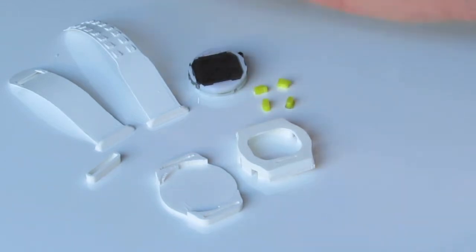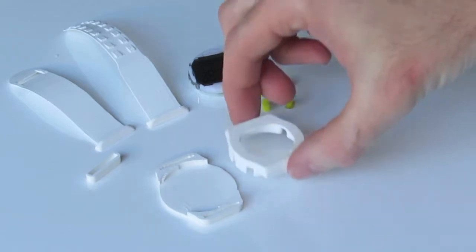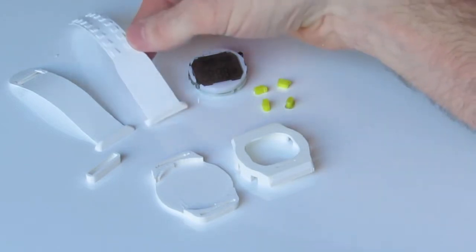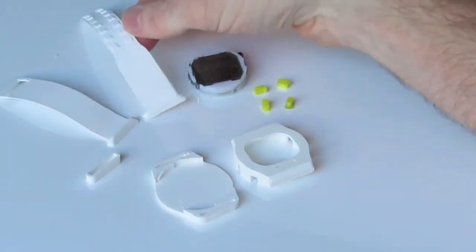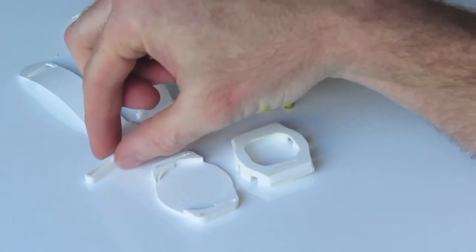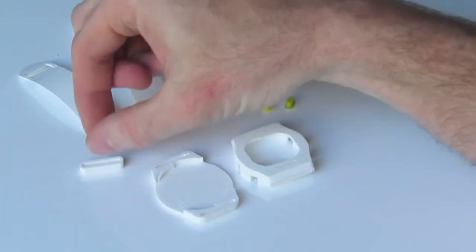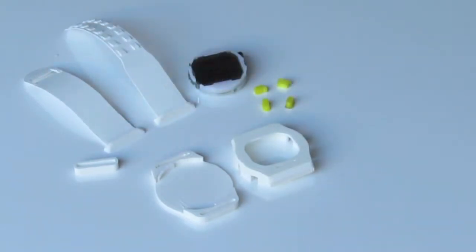You could even print your straps in a different color or part of your watch body in a different color as well if you wanted to. We've also got our two straps here, a long and short strap, and then just a little clasp which goes over the strap as well and helps keep the strap together from coming undone.